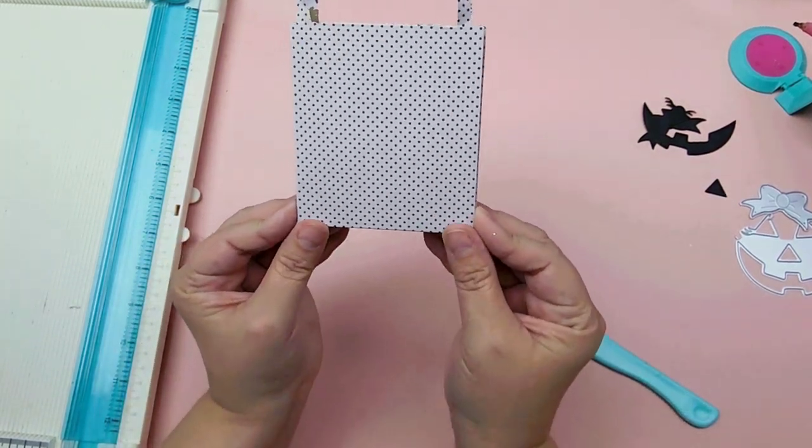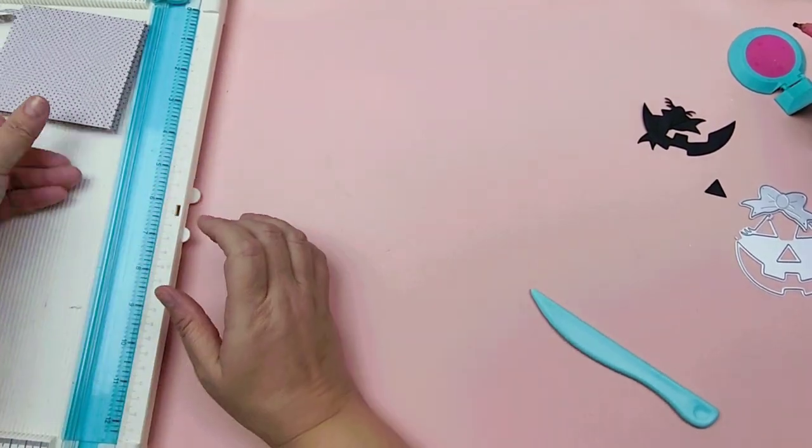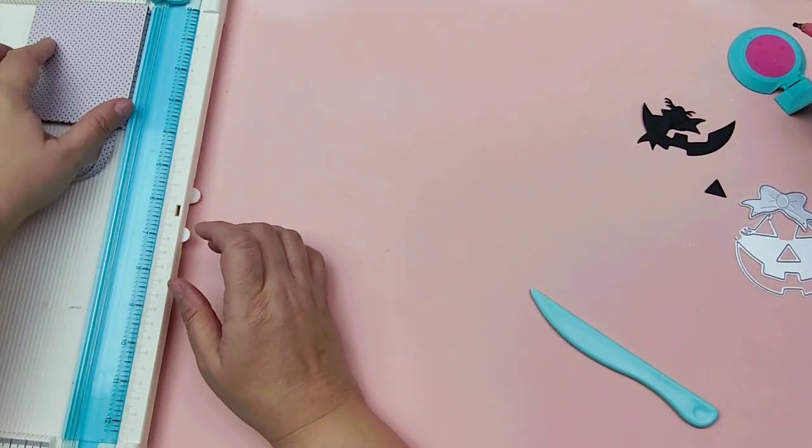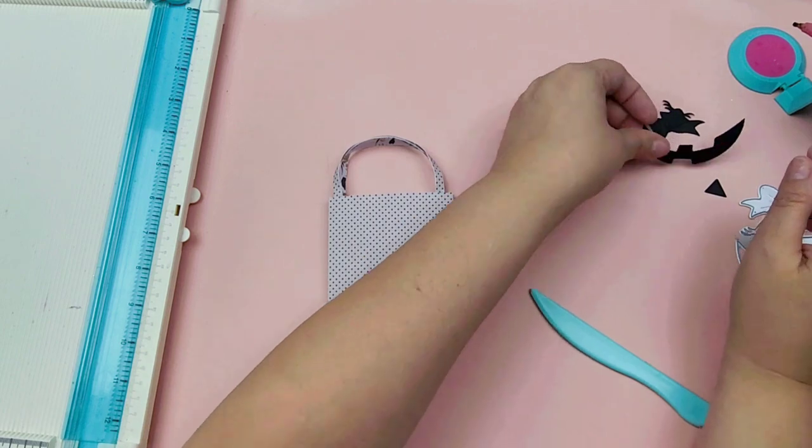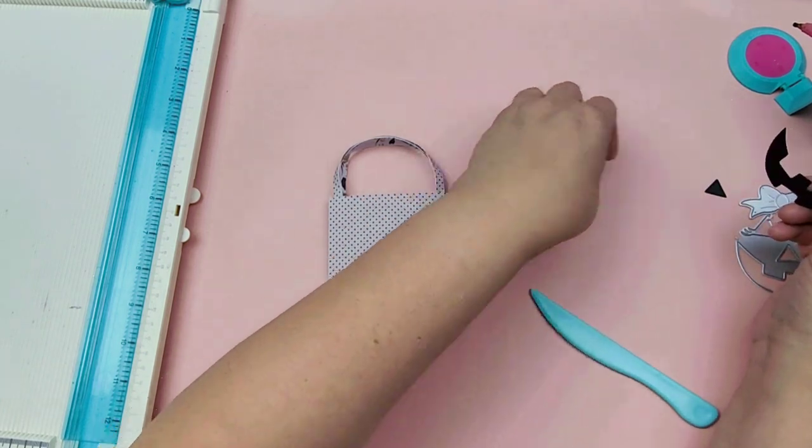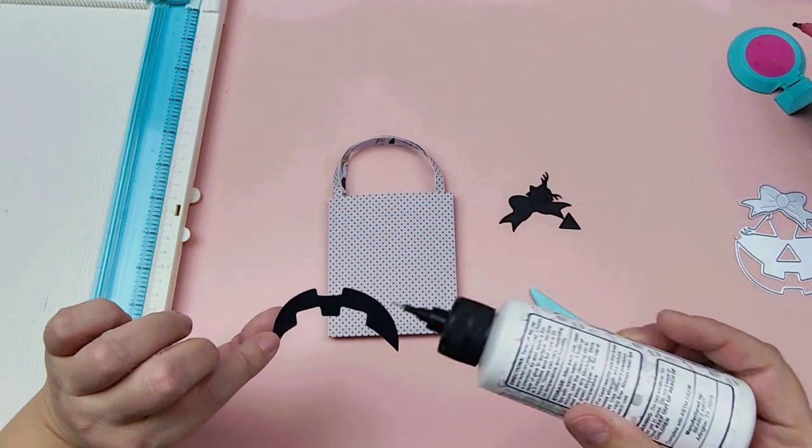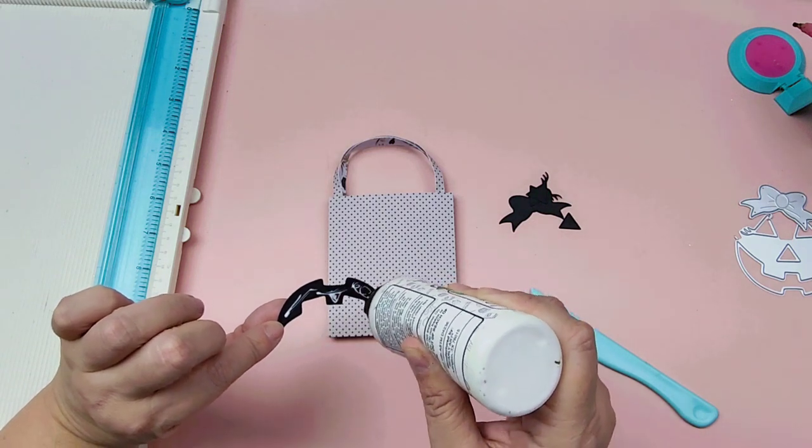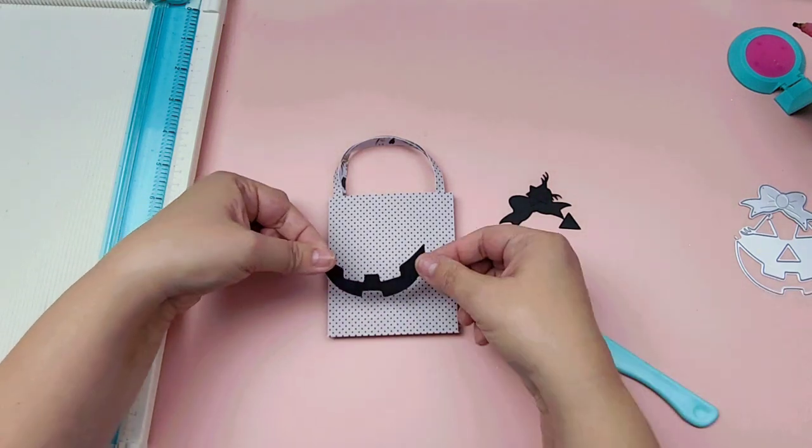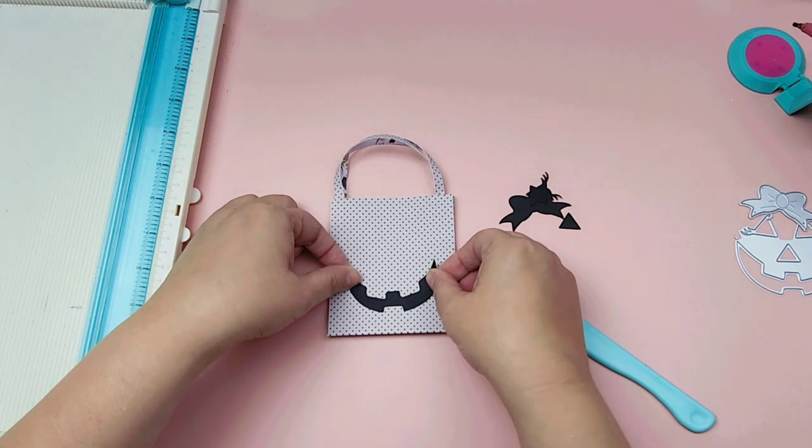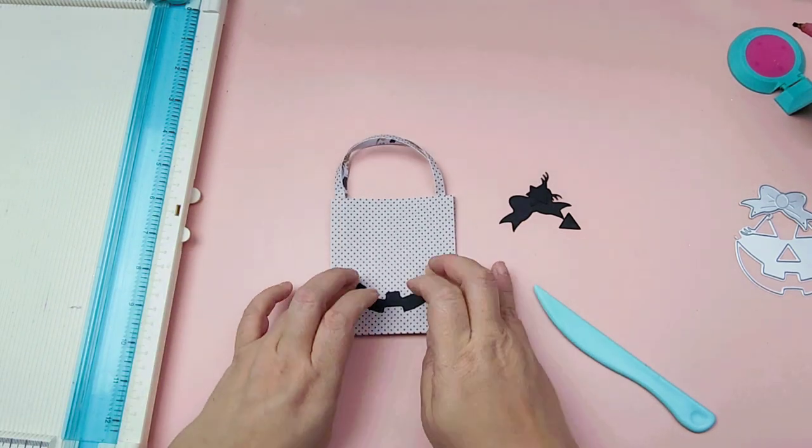So we've got our little treat bag, we've got our little handles, and then you can just mold those how you'd like them. Isn't this so cute? I love these, I think they're adorable. In the end, they measure four by three and a half. Now we're going to take our sweet little pumpkin face and we are going to put her together.